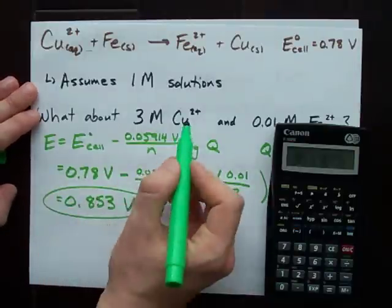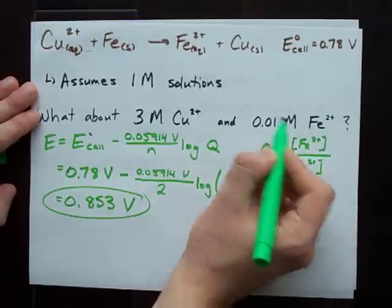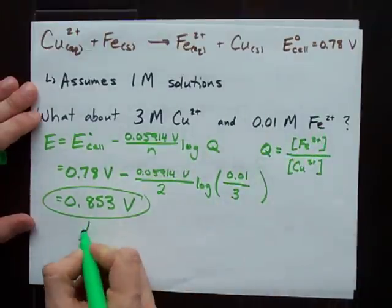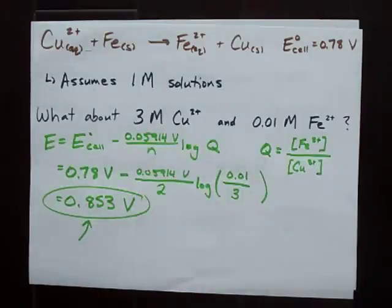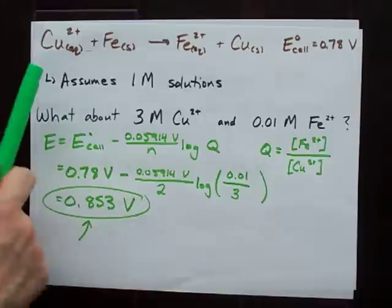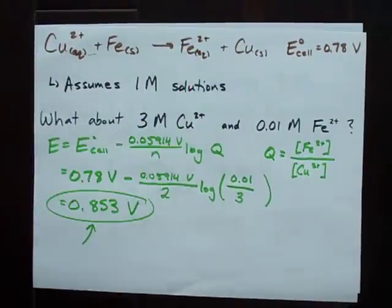By increasing the copper 2 concentration and decreasing the iron 2 concentration, I actually get a slightly bigger voltage out of my battery. I guess that makes sense, because I am providing a little more reactant and a little less product to start with.